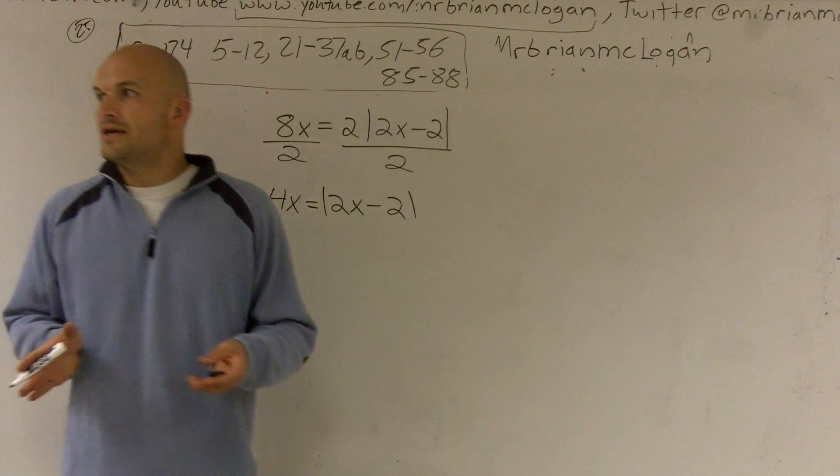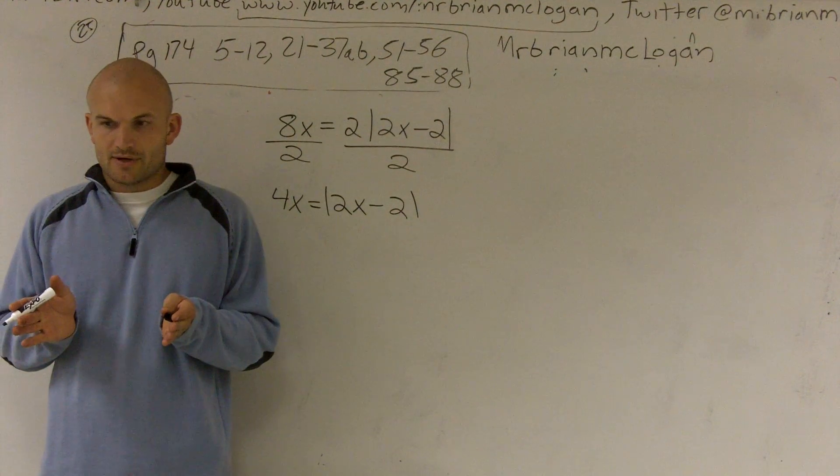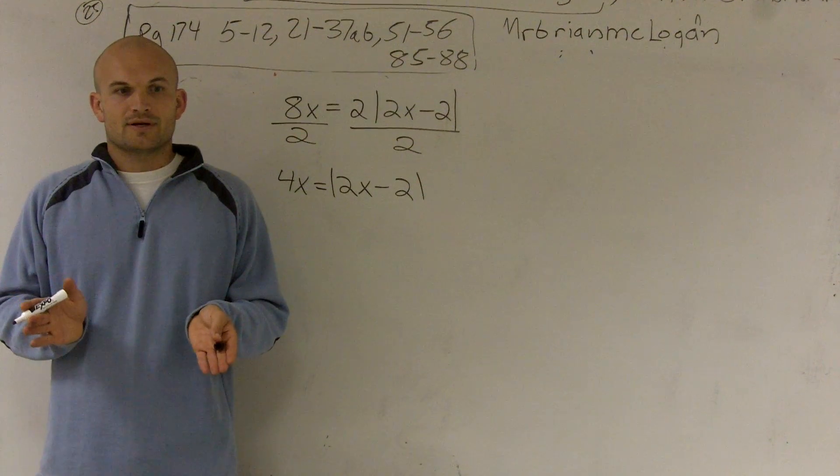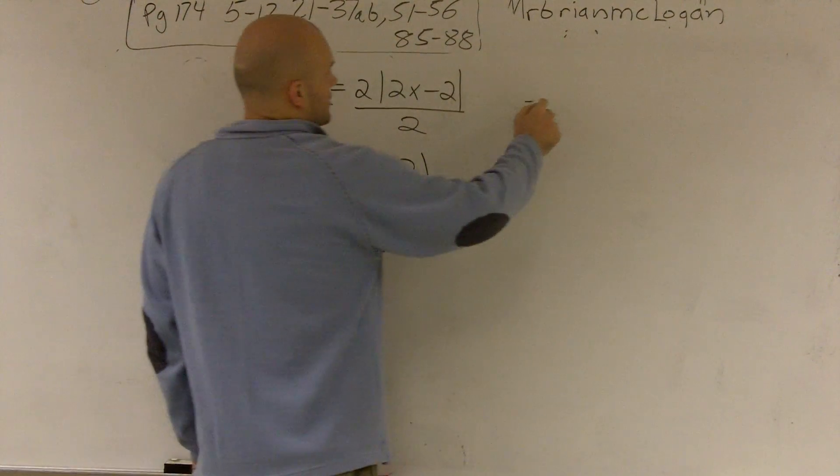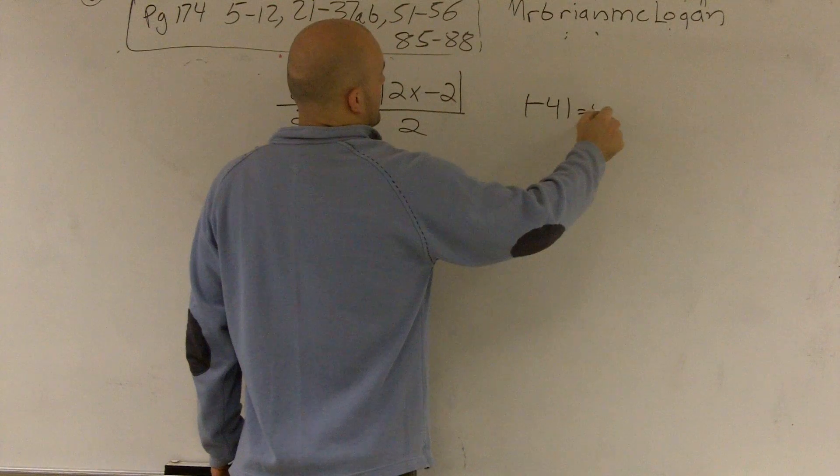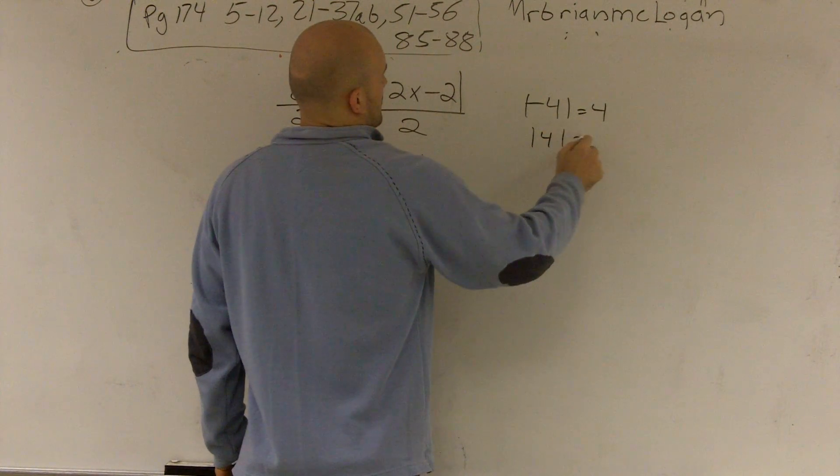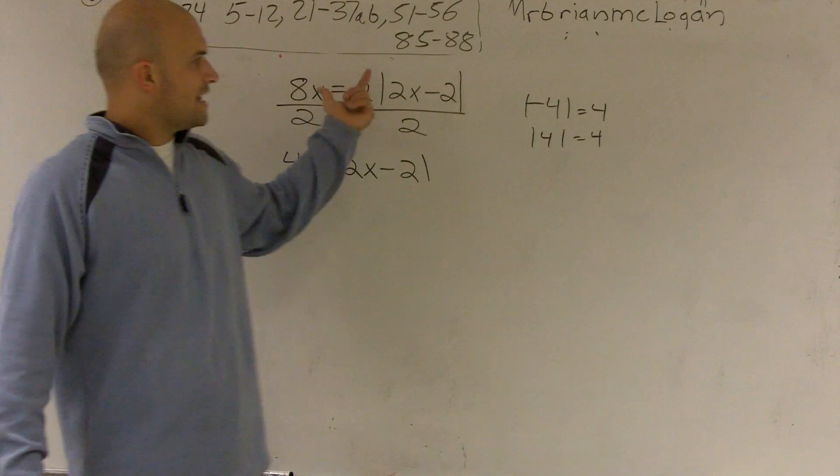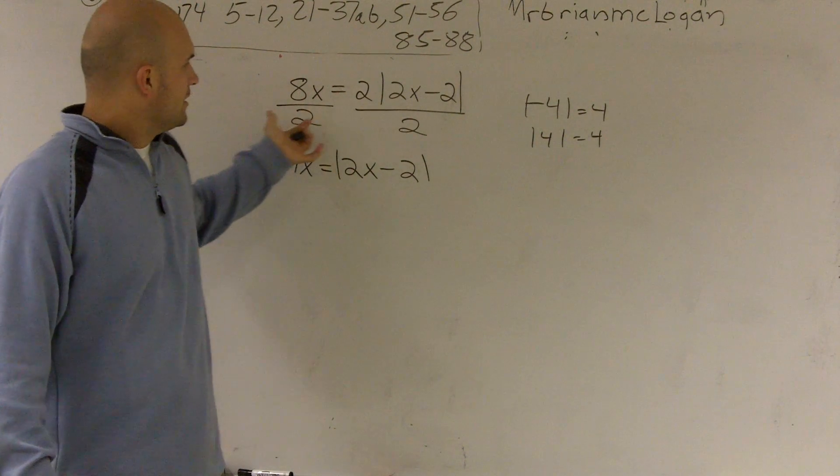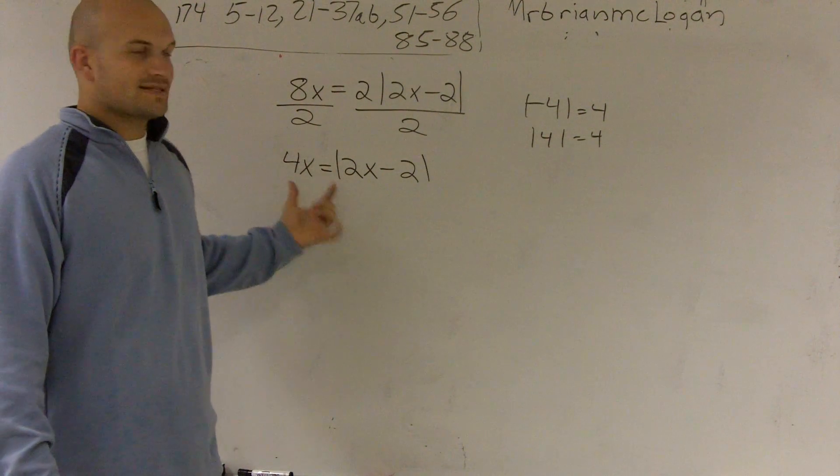Remember, absolute value - if I took the absolute value of a negative number and the absolute value of that positive number, it's still going to give me the exact same value. So therefore, there's a negative and there's a positive value that's going to give me my 4x that I can solve for.